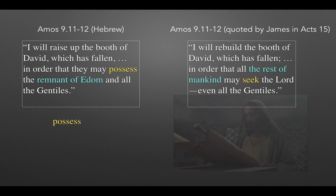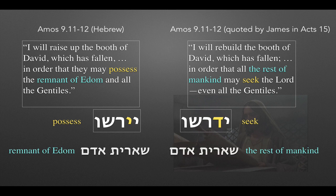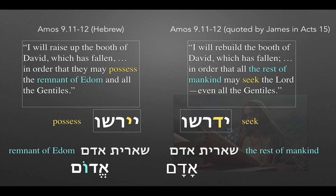The word 'possess' and the word 'seek' are very similar in Hebrew — Yershu and Yidrashu. And 'the remnant of Edom' and 'the rest of mankind' are identical in a consonantal text. The only way those would look different is if you add the vowel points — making Edom different from Adam. Edom is Edom, and Adam is mankind. You can see how something as ostensibly dry as textual criticism, and how there came to be a Greek Septuagint with multiple Hebrew and Greek versions, could have an impact on something as seminal as whether Gentiles should be included in the people of God.